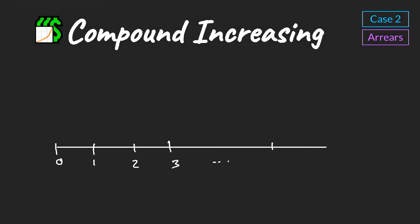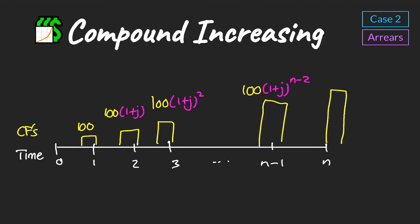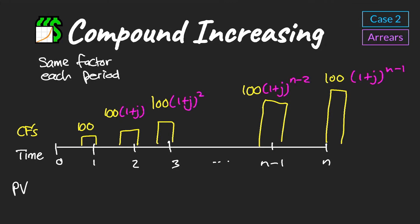Moving on to case two — compound increasing cash flows — we write out the cash flow profile. In this case our cash flows only start increasing from the second cash flow, i.e., from year two, and they increase by the same factor each period, namely (1 + j). This gives us the full set of cash flows for the compound increasing annuity.